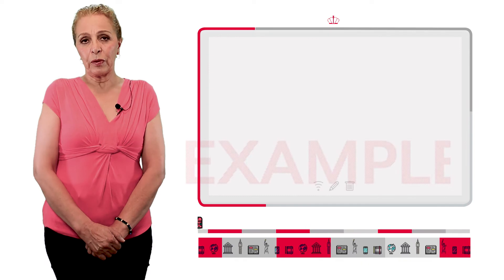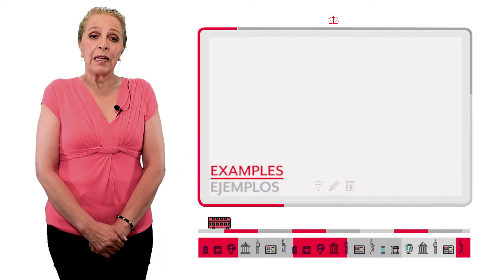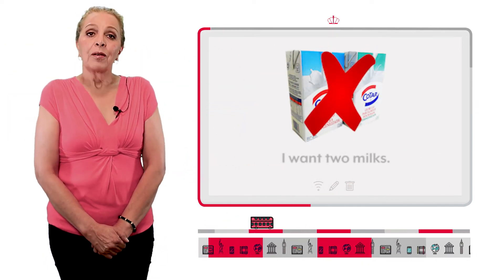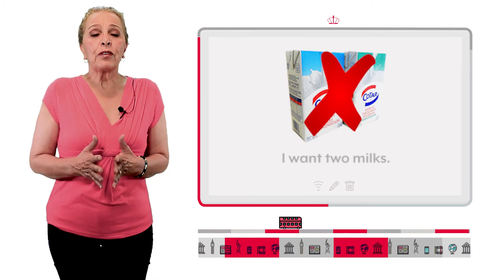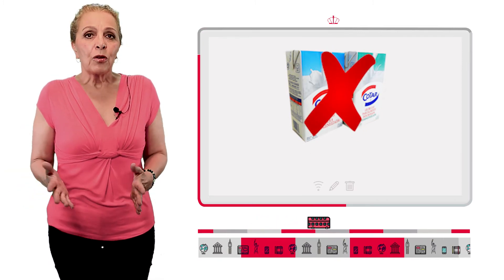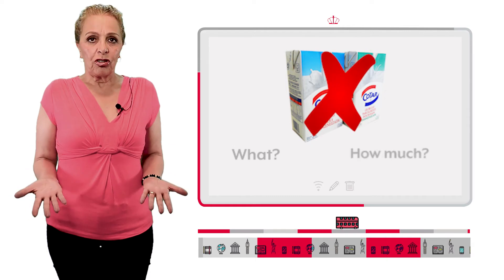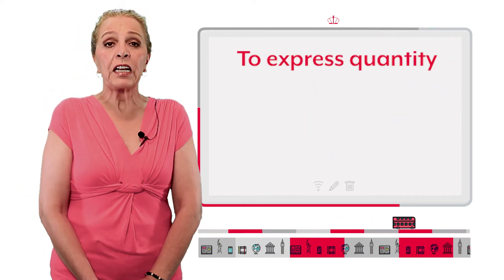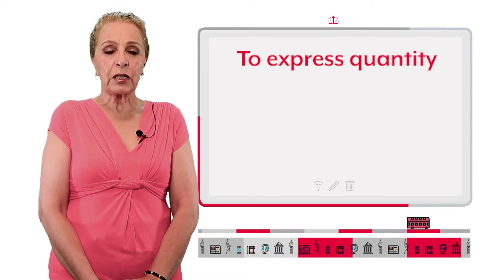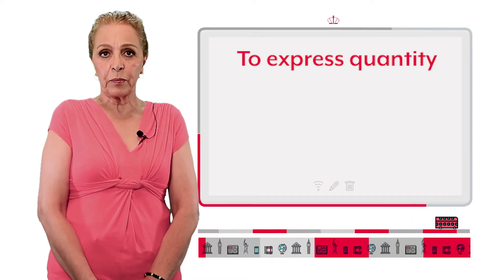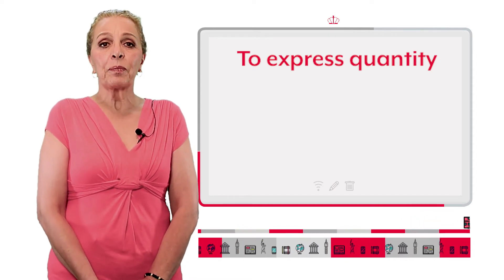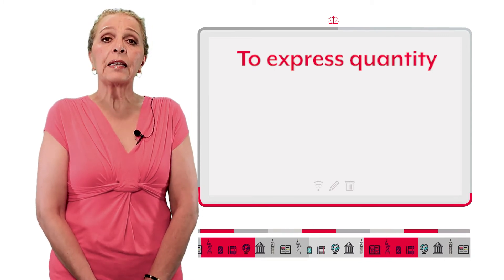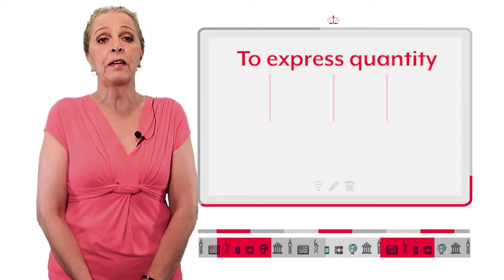Let's see one example. We cannot say 'I want two milks.' Why? Because we have to say something about the milk — how much of the milk? To express the quantity of an uncountable noun, we have to use the following expressions. Para expresar las cantidades de los sustantivos incontables, tenemos que utilizar las siguientes expresiones.